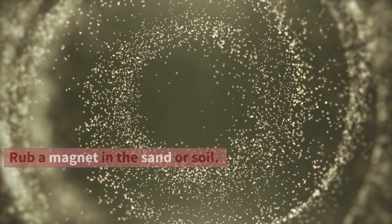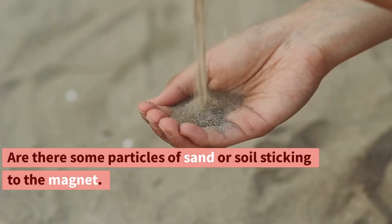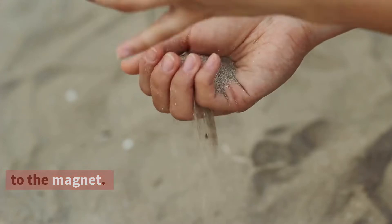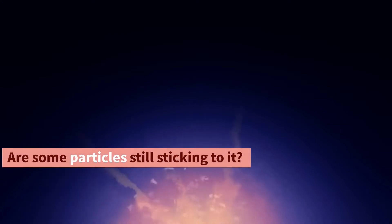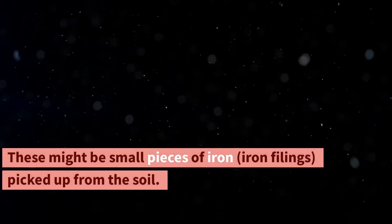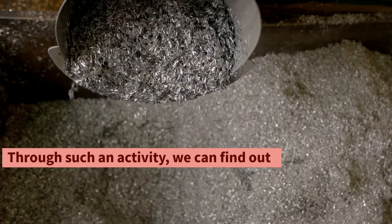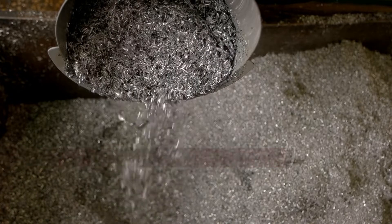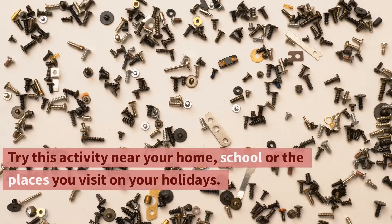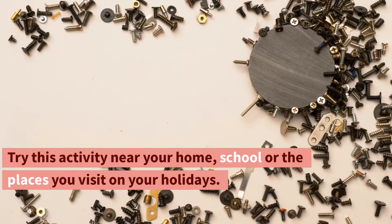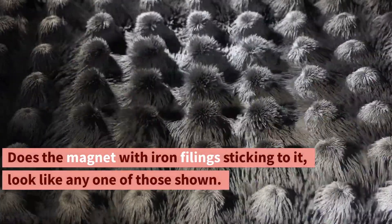Activity 3. Rub a magnet in the sand or soil. Pull out the magnet. Are there some particles of sand or soil sticking to the magnet? Now gently shake the magnet to remove the particles of sand or soil. Are some particles still sticking to it? These might be small pieces of iron, iron filings, picked up from the soil. Through such an activity we can find out whether the soil or sand from a given place contains particles that have iron. Try this activity near your home, school or the places you visit on your holidays. Does the magnet with iron filings sticking to it look like any one of those shown?